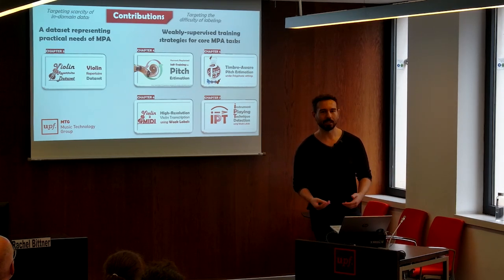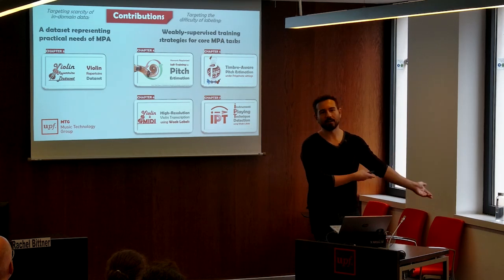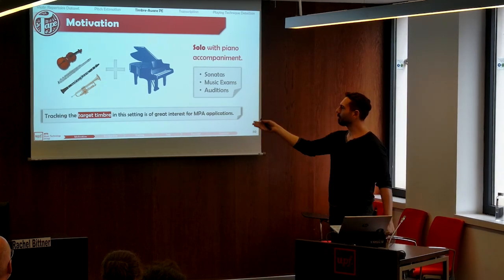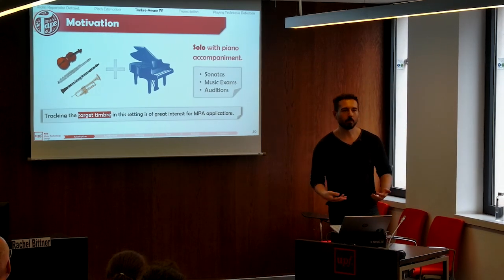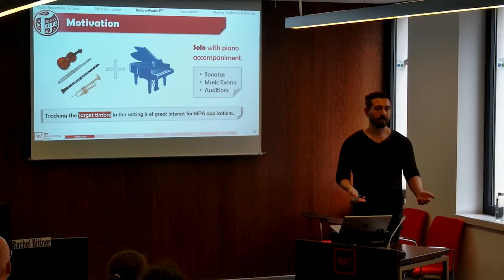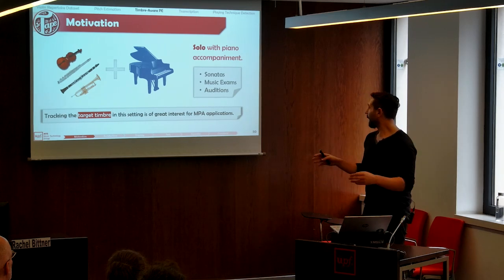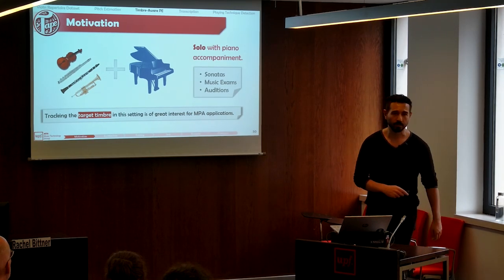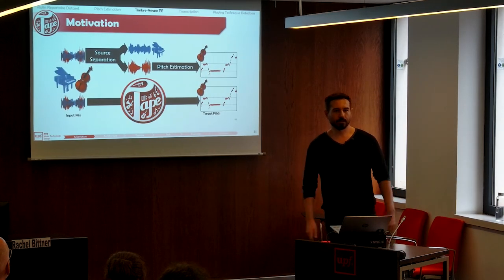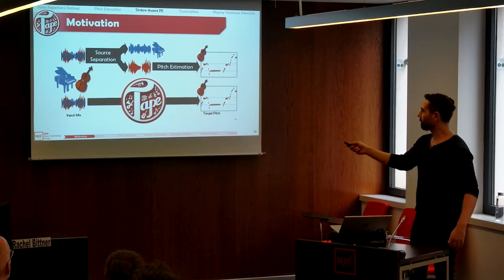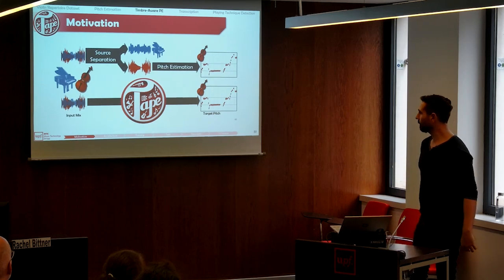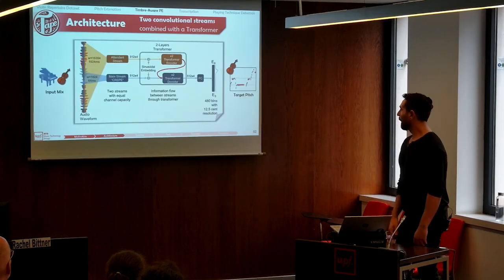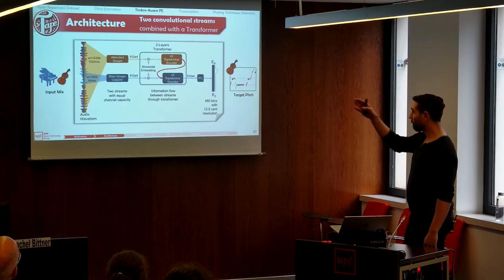In any performance of violin, flute, clarinet, or most soloist instruments, when you go to an audition or music exam, you're expected to go with your accompanist. You are playing a violin sonata which naturally has piano. So tracking the target timbre in this setting is of great interest for music performance analysis applications. The usual approach is to first apply source separation and then pitch estimation on the separated signal. But what we did is, I think, very simple: just estimating the target pitch directly from the input mix. For this purpose, we created an architecture based on two convolutional streams combined with a transformer.